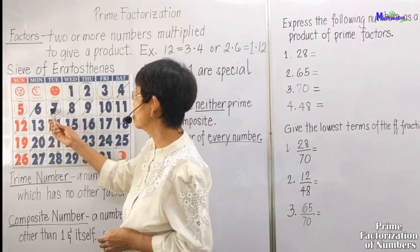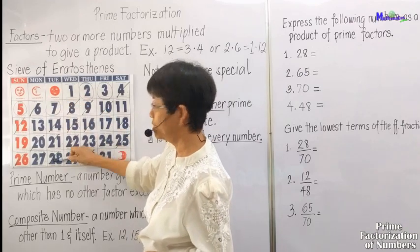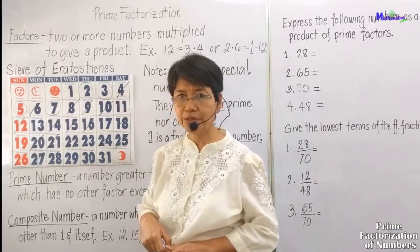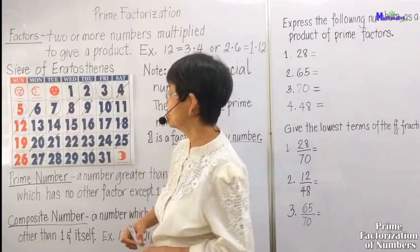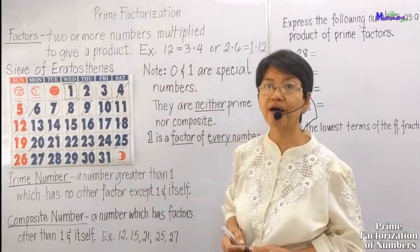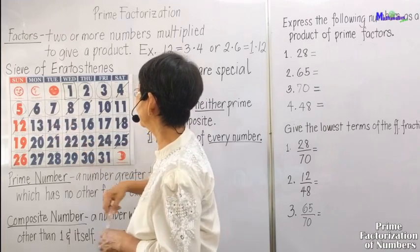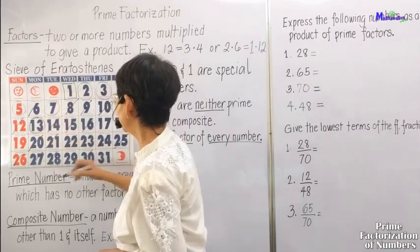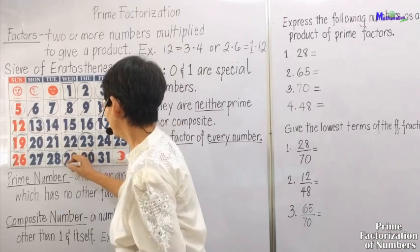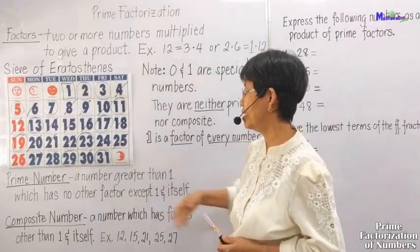Lastly, we cross out all the numbers divisible by 7 — and in that line they are all crossed out. Therefore, all the leftover numbers that were not crossed out — except 1, because 1 is a special number — are prime numbers. So we have 2, 3, 5, 7, 11, 13, 17, 19, 23, 29, and 31. These are the prime numbers between 1 and 31.